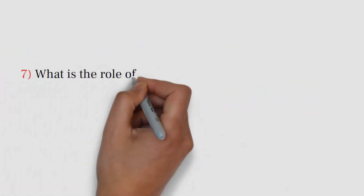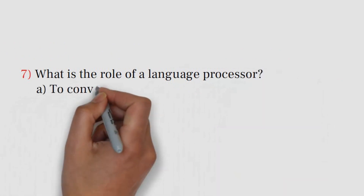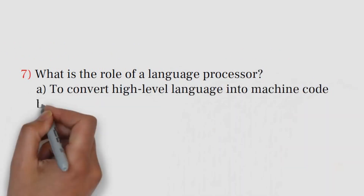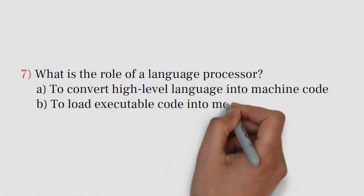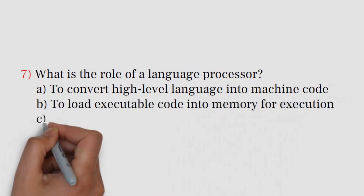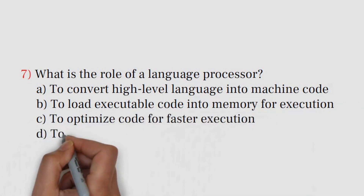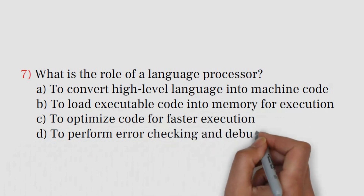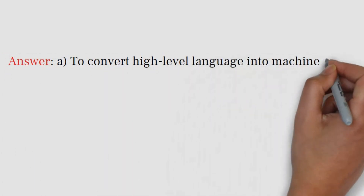Question number 7. What is the role of a language processor? A. To convert high-level language into machine code. B. To load executable code into memory for execution. C. To optimize code for faster execution. D. To perform error checking and debugging. Answer: A. To convert high-level language into machine code.